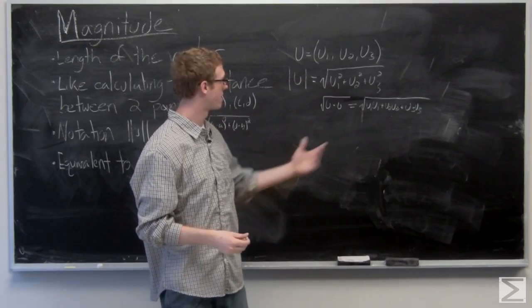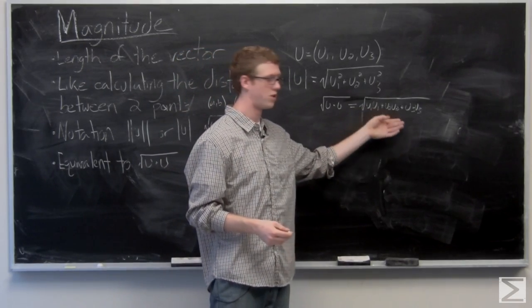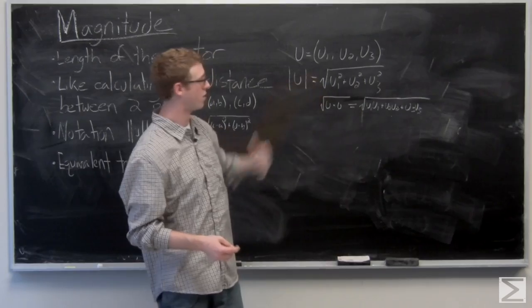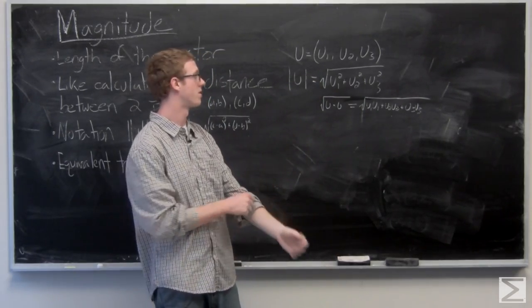So u dotted with itself is going to be u1, u1, u2, u2, u3, u3, or u1 squared plus u2 squared plus u3 squared.